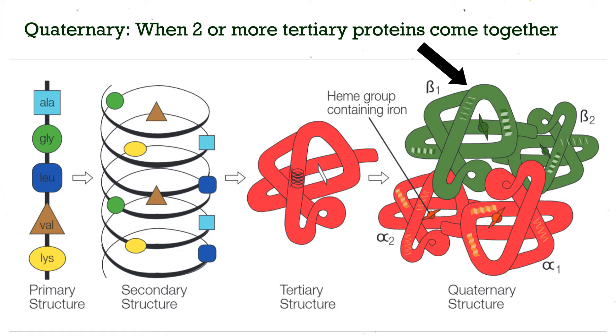The quaternary structure of proteins occurs when two or more tertiary proteins come together to make a larger, more complex protein. An example of this would be haemoglobin, which is actually made up of 4 polypeptide chains.